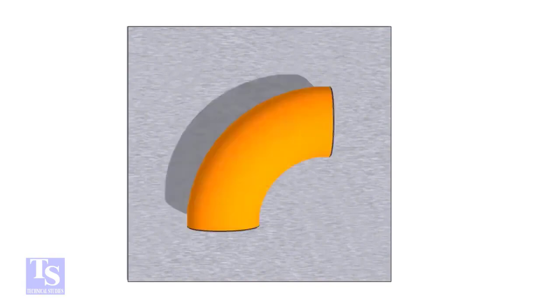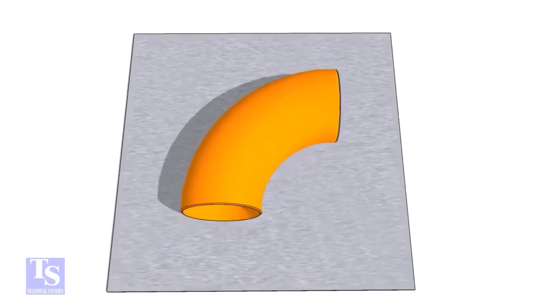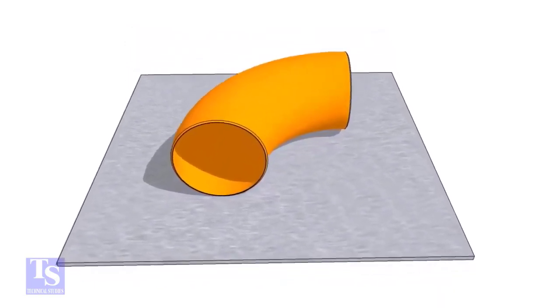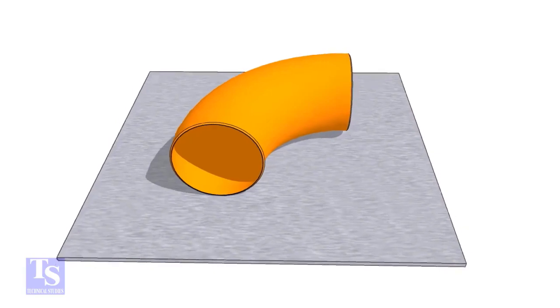First of all, choose a leveled plate and put the elbow on it. Check the outer diameter of the elbow.